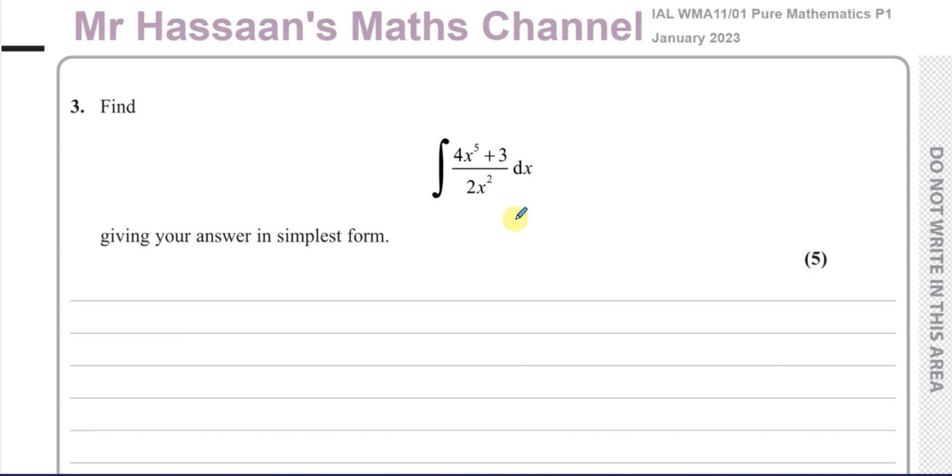One of the common mistakes that people make is they will integrate the numerator and the denominator separately and just write the answer down. And that's completely wrong. You have to express these as separate terms and then integrate each term separately. And that's how you answer such a question.